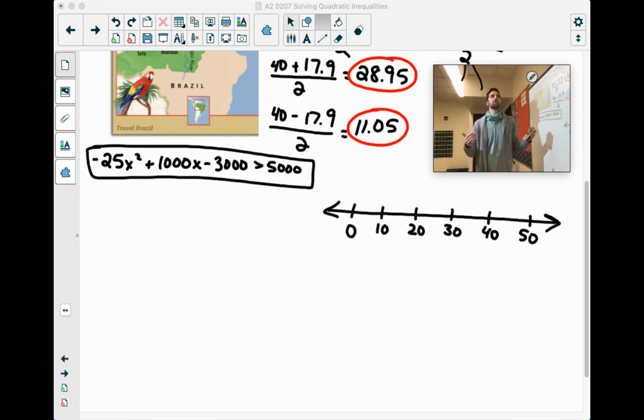But this problem's asking about human beings. You're not going to have 28.95 humans unless they cut their nails really short and shave off a bit of a human. Same thing as the 11.05.